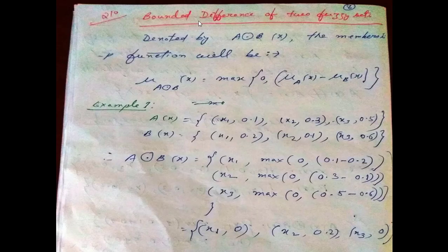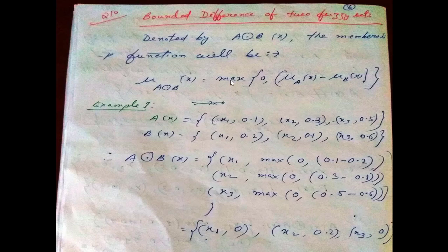Next topic is bounded difference of two fuzzy sets. It is denoted by a circle with a dot under it. The membership grade for bounded difference is: μ(A⊖B)(x) = max(0, μA(x) − μB(x)). We need to find the maximum of 0 and μA(x) minus μB(x).